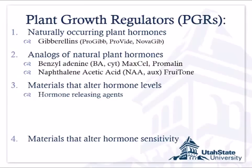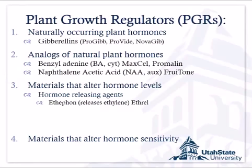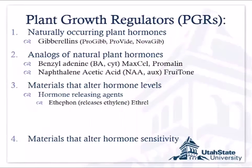Other plant growth regulators are materials that alter hormone levels. Ethephon is the active ingredient in the formulation Ethrel. Ethephon breaks down and releases ethylene. We can't apply ethylene directly because it's a gas — it'd just go off into the atmosphere. But we can spray ethephon, which is a stabilized molecule, and when it gets on or in the plant, it breaks apart and releases ethylene right when we want it. Ethylene is used to ripen fruit, and cherry growers use it to stimulate fruit abscission so that when you shake the trees, all the fruit comes off at once.